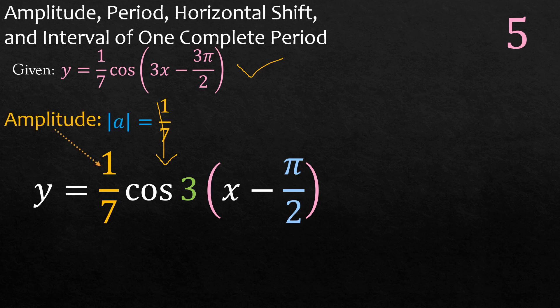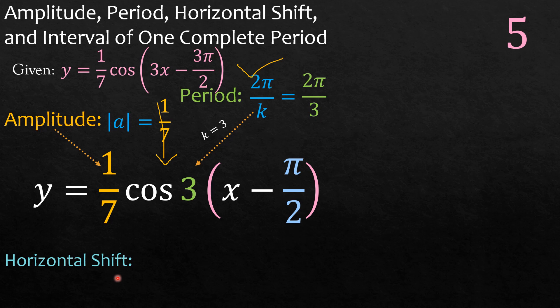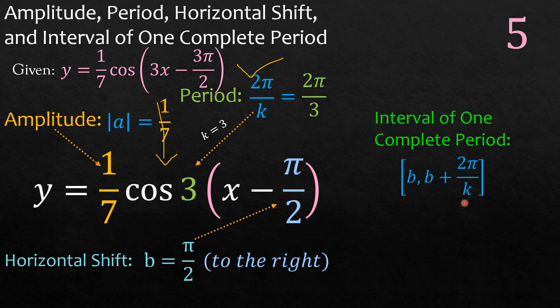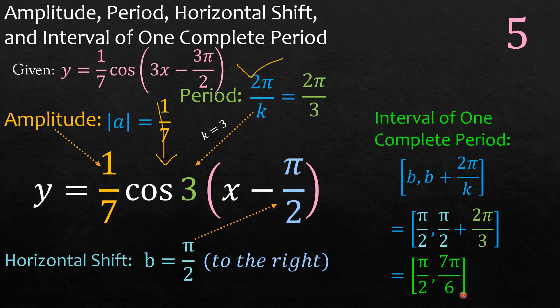From the factored form y equal to 1 over 7 cosine 3 times x minus pi over 2: the amplitude is 1 over 7. The period is 2 pi over k where k is 3, so that gives 2 pi over 3. The horizontal shift: we see this is negative, so b is positive pi over 2, and that is shifting to the right. The interval of one complete period: b is pi over 2 and 2 pi over k is 2 pi over 3; adding pi over 2 to 2 pi over 3 gives 7 pi over 6. So the interval is from pi over 2 to 7 pi over 6.